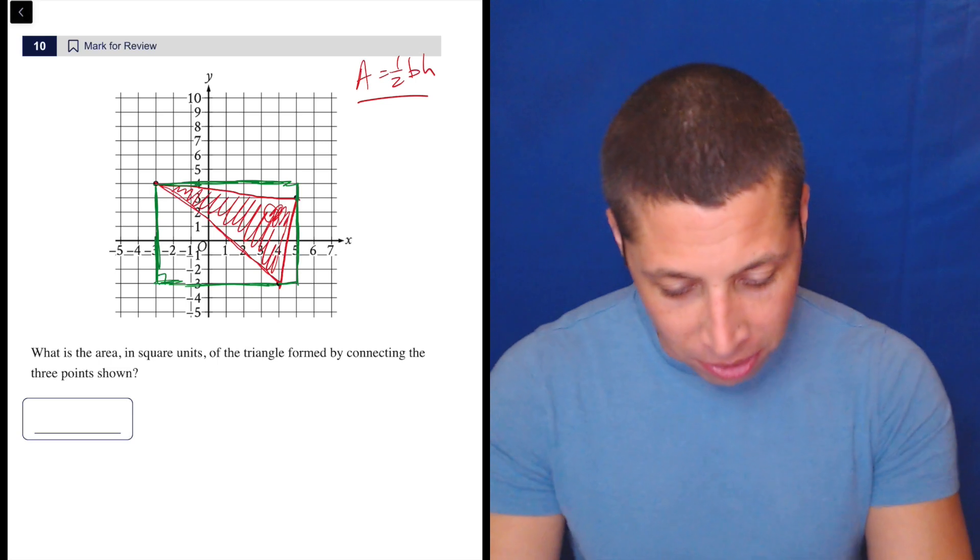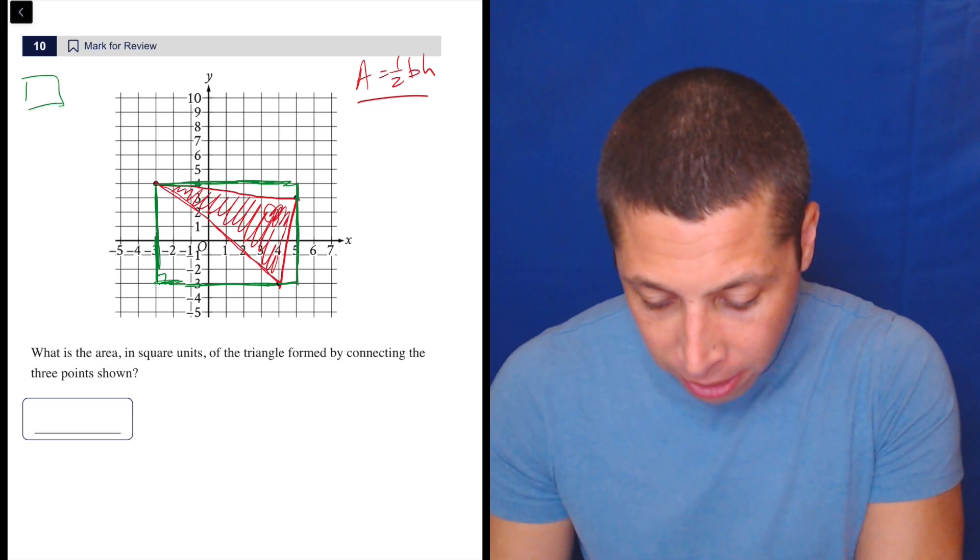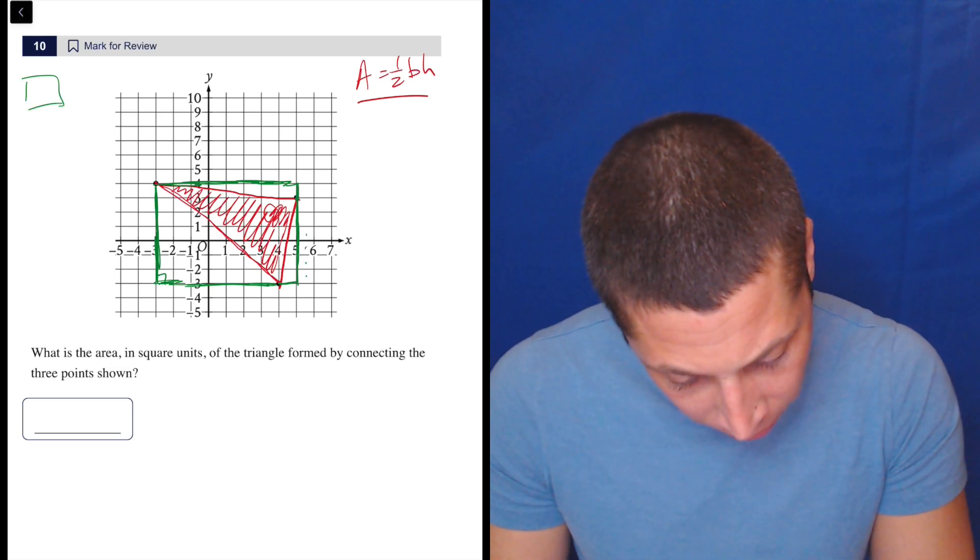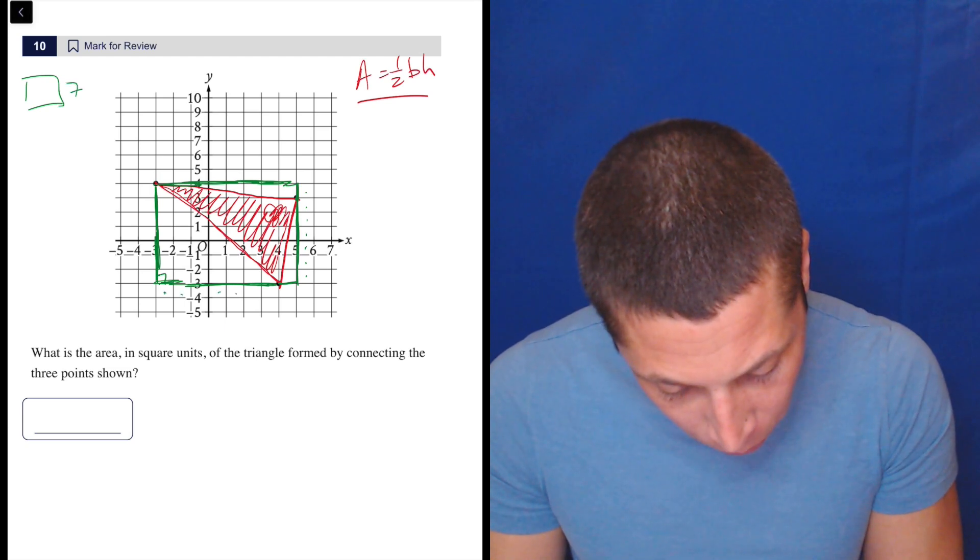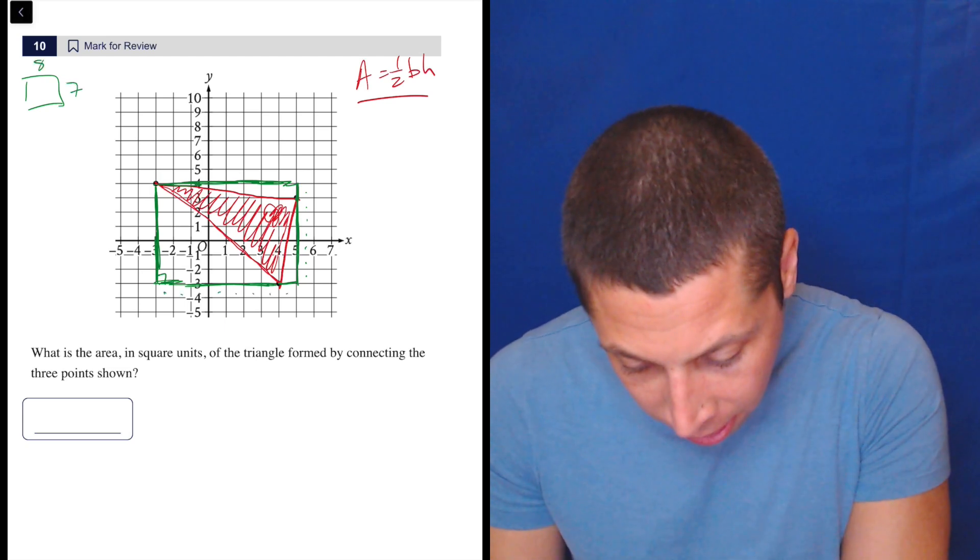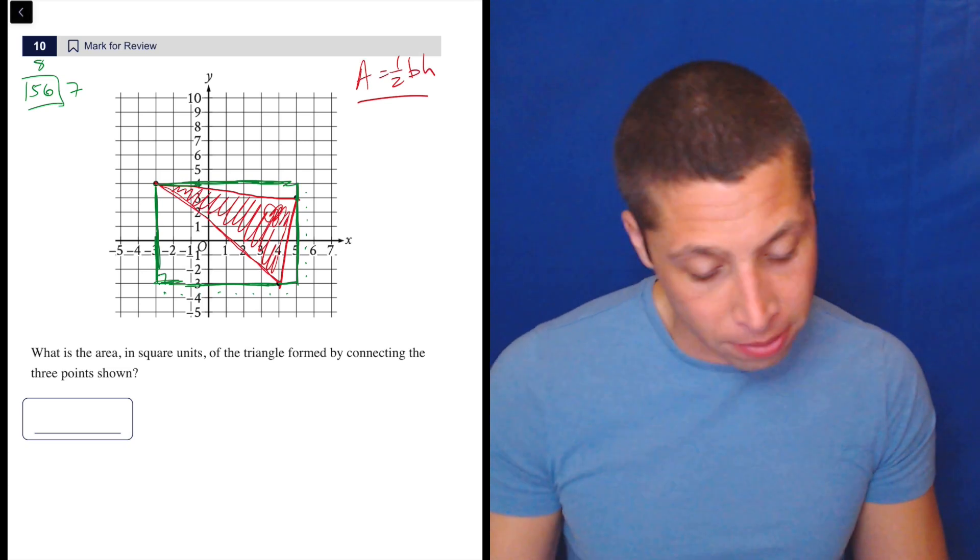A right triangle is a much simpler shape than any other triangle because right triangles, we can just use the area equals one half base times height formula because it requires the height and the base be perpendicular to each other. So let's just start with a simple part. Let's get the rectangle. The rectangle is what? It's one, two, three, four, five, six, seven by one, two, three, four, five, six, seven, eight. So the area of the rectangle is 56. That's the big one.